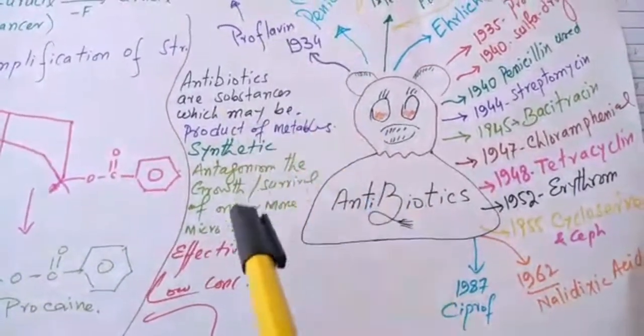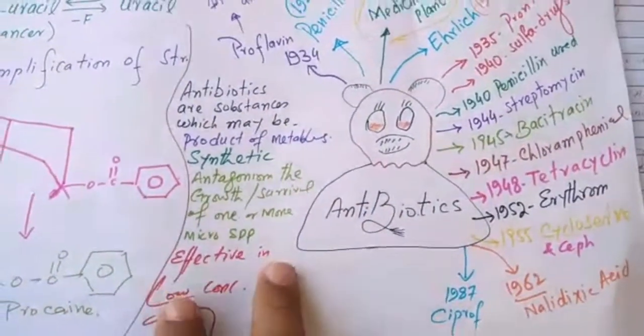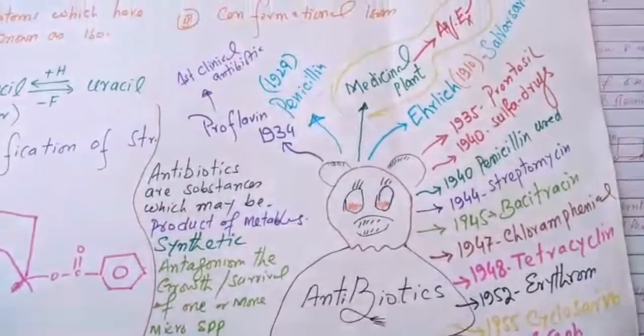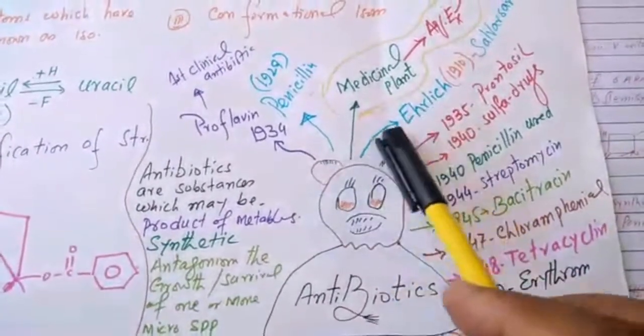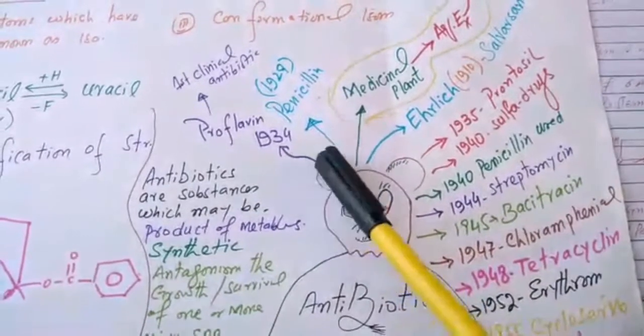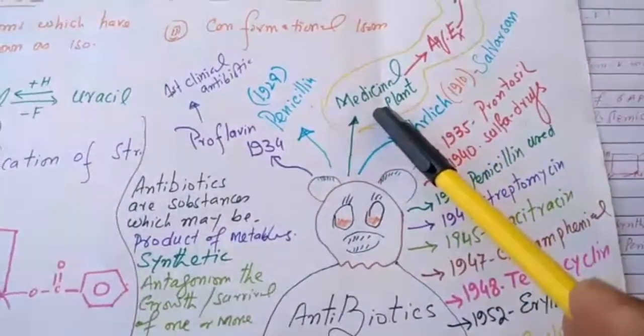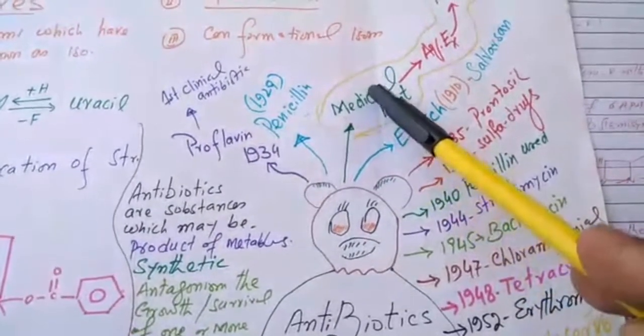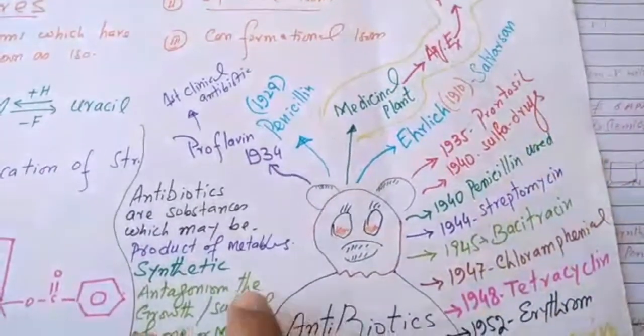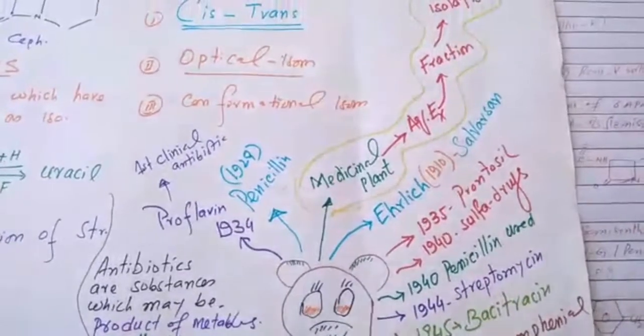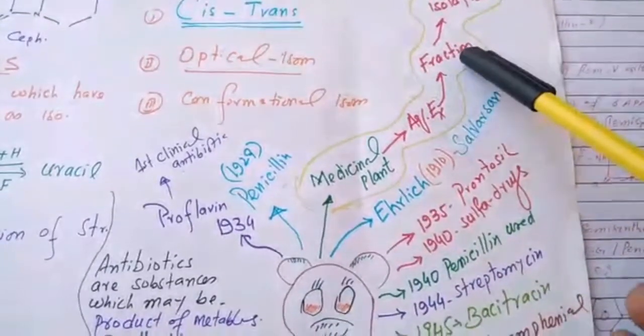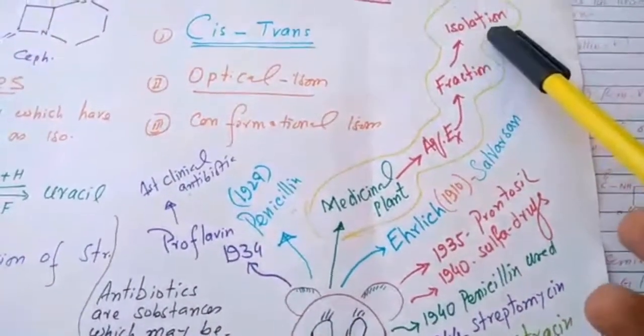The history of antibiotics: the first antibiotic used by human beings was medicinal plants. Later on, the aqueous extract was used as an antibiotic. Later on, fractionation was done, then isolation, and even the present modern antibiotics.